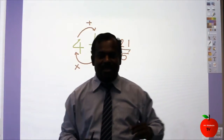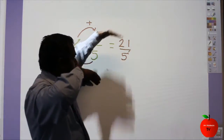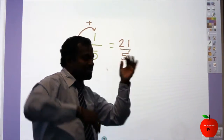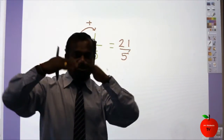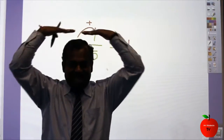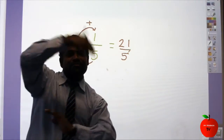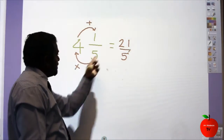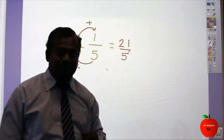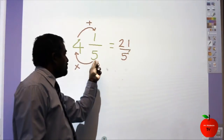That's what we call the improper fraction — the heavy fraction. Heavy means the top number is bigger and the bottom number is smaller, and that's the improper fraction. You should also know how to convert it back to a mixed number. How many 5s in 21? 4. 4 times 5 is 20, and the remainder is 1, over 5. That means 4 and 1 over 5.